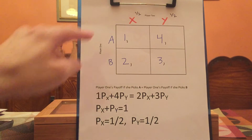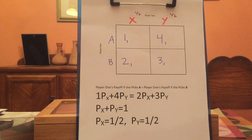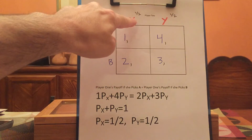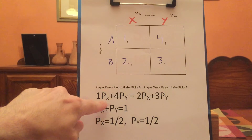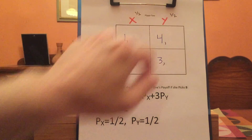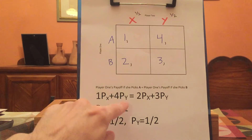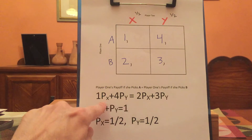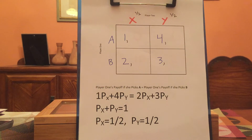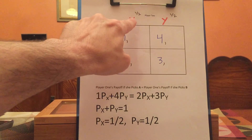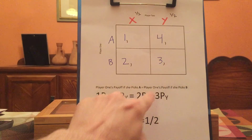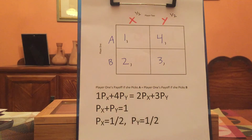Player one is willing to randomize between A and B if she gets the same payoff from playing A as she does from playing B. If player one plays A, she gets one times the probability that X is played, which I call p-sub-x, plus four times the probability that Y is played, which I call p-sub-y. So this is player one's average payoff if she plays A. If player one plays B, her payoff is two times the probability that X is played, plus three times the probability that Y is played.